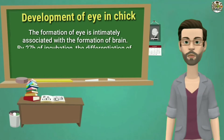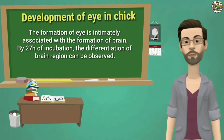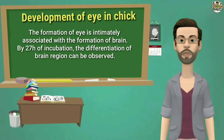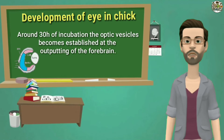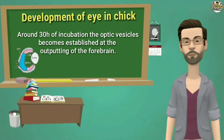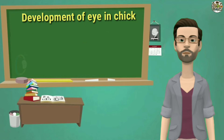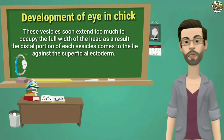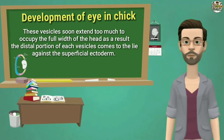The formation of eye is intimately associated with the formation of brain. By 27 hours of incubation, the differentiation of brain region can be observed. Around 30 hours of incubation, the optic vesicles become established at the outpocketing of the forebrain. These vesicles soon extend to occupy the full width of the head, and as a result, the distal portion of each vesicle comes to lie against a superficial ectoderm.